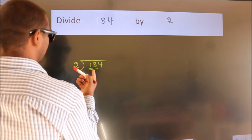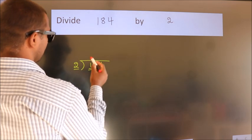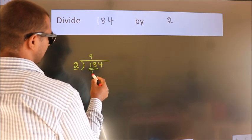When do we get 18? In 2 table, 2 nines, 18.